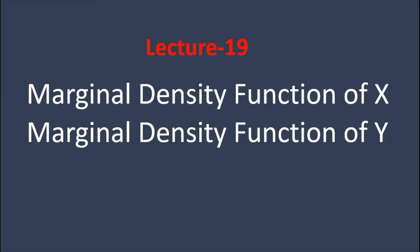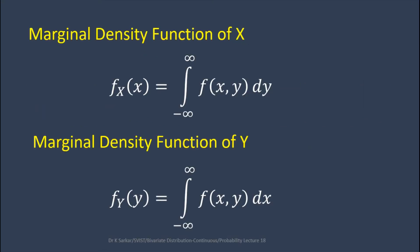In this lecture I am going to discuss the marginal density function of x and marginal density function of y. The marginal density function of x, denoted as f_X(x), equals the integration from minus infinity to infinity of f(x, y) dy. The marginal density function of y, f_Y(y), equals the integration from minus infinity to infinity of f(x, y) dx. When finding the marginal PDF of x, you integrate the joint PDF with respect to y with limits from minus infinity to infinity. Similarly, when finding the marginal PDF of y, you integrate the joint PDF with respect to x with limits from minus infinity to infinity.